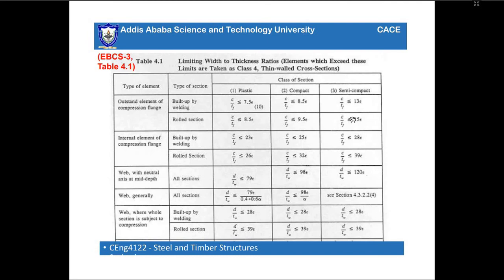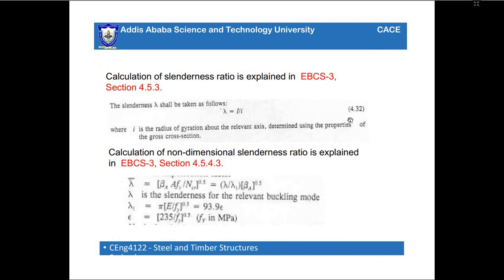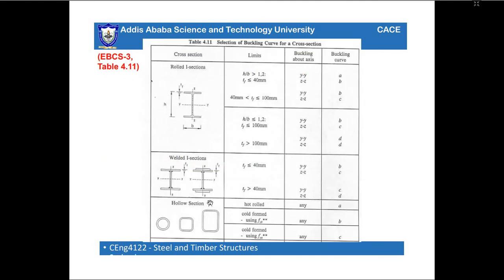The slenderness ratio is calculated as the ratio of the effective buckling length to the radius of gyration about the relevant axis, determined using the appropriate properties of the gross cross section. A table is used to select the buckling curve. Buckling curves differ for the two axes yy and zz. If the h/b ratio is greater than 1.2 and flange thickness is less than or equal to 40 mm, curve 'a' is used for the yy axis and curve 'b' for the zz axis.